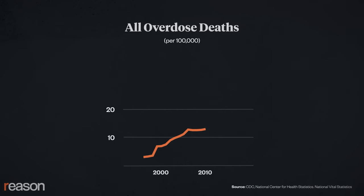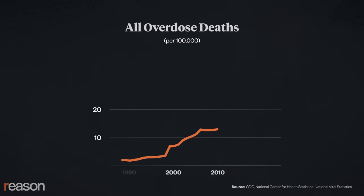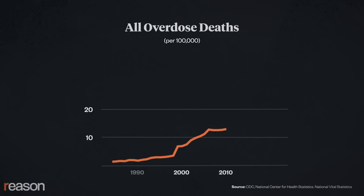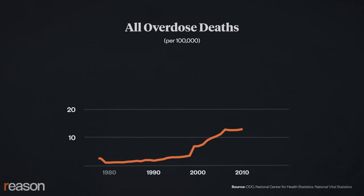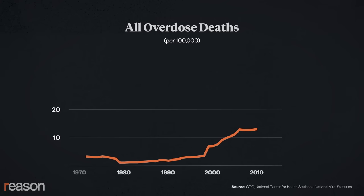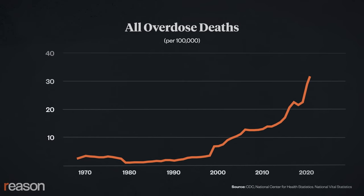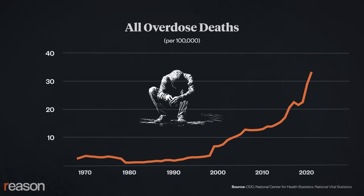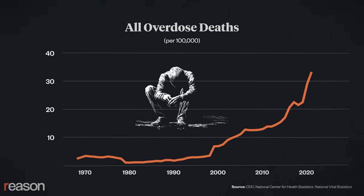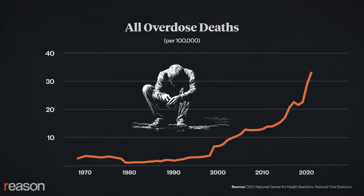If we widen the time span, we see that overall drug overdose deaths have been increasing at a fairly steady rate since 1979 — 17 years before OxyContin became available — and continuing along after legal use of opioids was severely cut back. During the same period, we see parallel increases in deaths from suicide and alcohol abuse, or so-called deaths of despair. There have also been steady increases in diagnoses of depression.